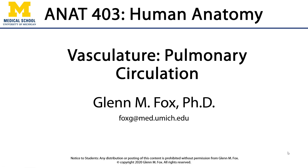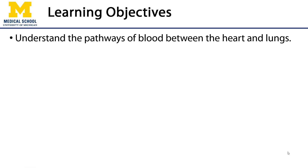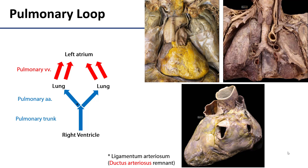Hi, let's talk about pulmonary circulation. In this video we'll discuss the pathways of blood between the heart and the lungs. As you may recall, there is a pulmonary loop and a systemic loop when it comes to circulation. The systemic loop takes richly oxygenated blood, distributes it to metabolically active tissues throughout the body, and then returns it back to the heart. The pulmonary loop takes that returned deoxygenated blood, pushes it to the lungs, and then returns it back to the heart renewed with oxygen.